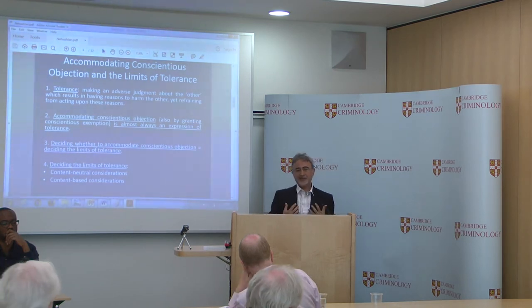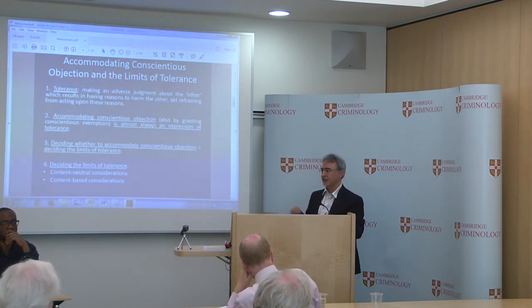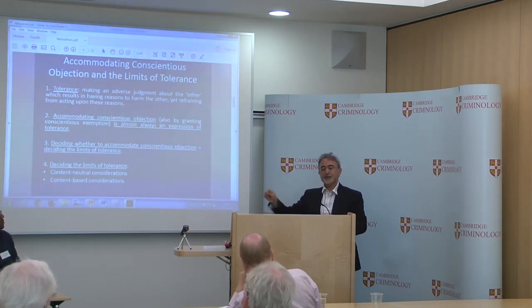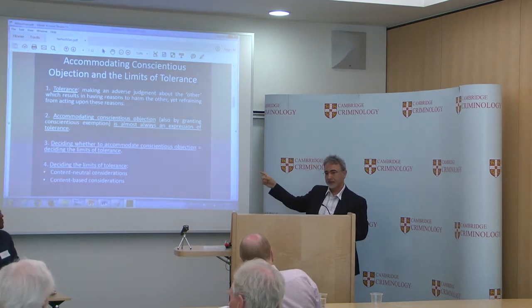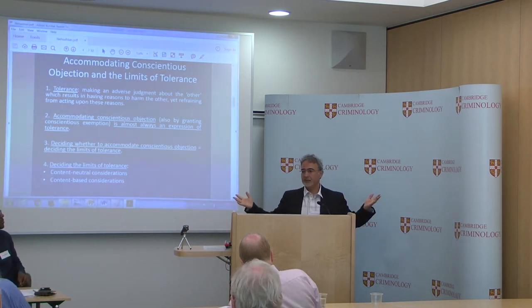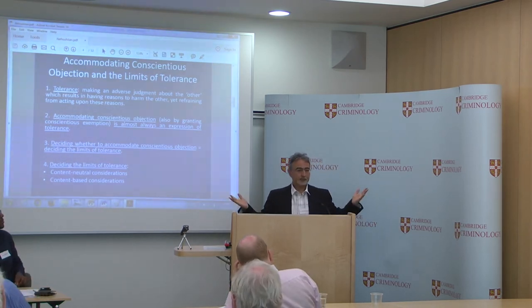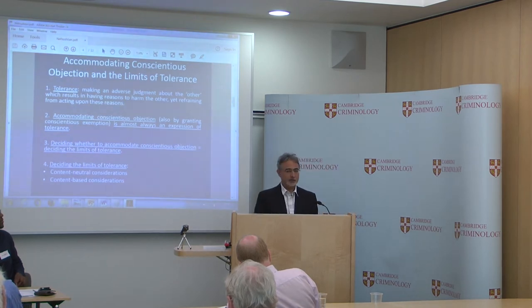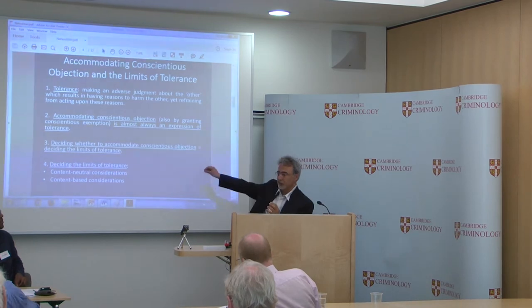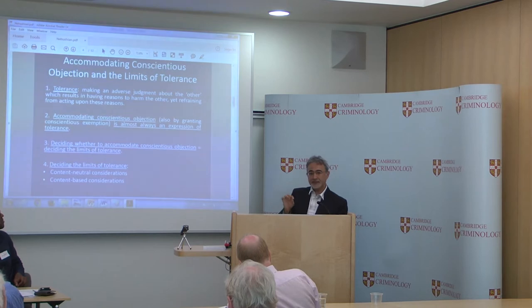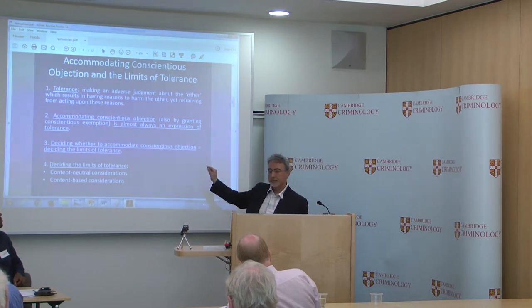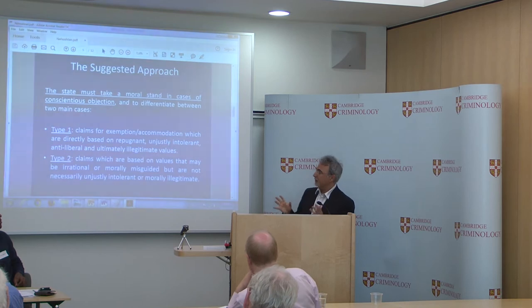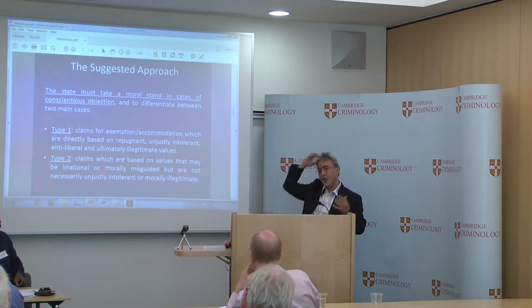If the fact that the legislature thinks that the conscientious objector is wrong is a sufficient reason not to tolerate the objector, not to exempt them from the rule, then we won't have conscientious exemptions ever — because we always think that they are wrong. We need something on top of that, we need another reason why not to tolerate the conscientious objector. That reason can be either content-neutral — harm that may be caused to others or to public interest — but that reason can also be content-based.